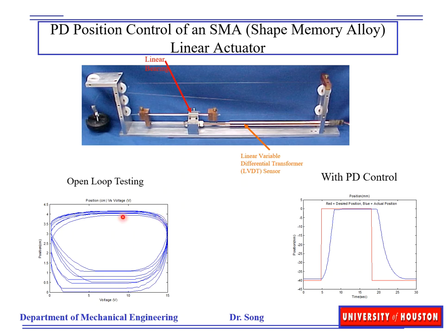There is also hysteresis — meaning it's not a one-to-one relationship. We then introduce the proportional plus derivative control, utilizing a linear variable differential transformer (LVDT) as a sensor. When we heat the SMA wire it will contract; when we cool it, the weight will pull it back. The blue curve is the actual response and the red one is the command — we can clearly see we can follow the command.